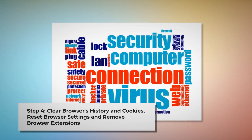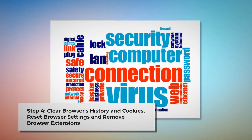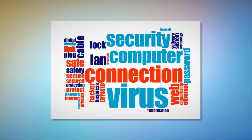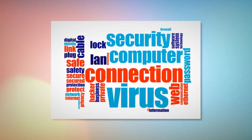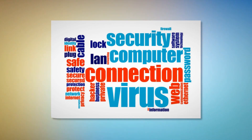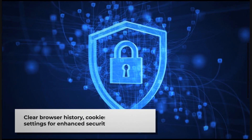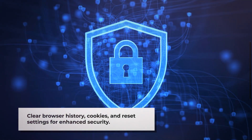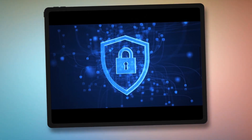Step four: clear your browser's history and cookies, reset browser settings, and remove or disable unknown browser extensions. Once you delete the harmful files from Step 3, you should also delete malicious or unknown extensions from your browsers — Safari, Chrome, Firefox, Opera, and so on, whichever you are or were using. You should also delete browser history and cookies, and reset your browser. Note: before you reset your browser settings, it is always a good idea to back up your bookmarks.